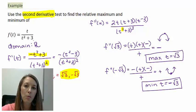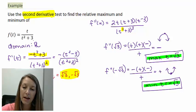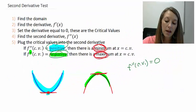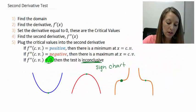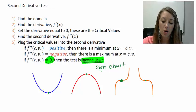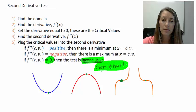So my final answer is: we have a maximum at t = √3 and a minimum at t = −√3. You're welcome to check these with a graphing calculator. This video was to show you the limitations of the second derivative test. If the second derivative is complicated to take, it's probably not going to be a better test. And if f'' equals zero at a critical value, the test is inconclusive — it doesn't tell us whether we have a maximum, minimum, or neither. In that case, we have to use the sign chart.